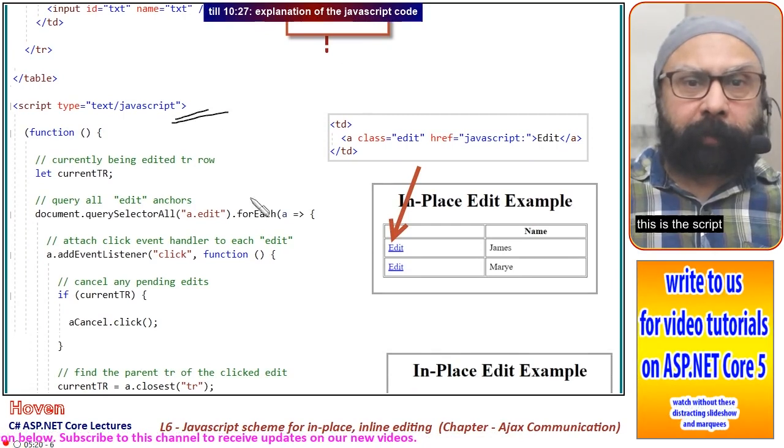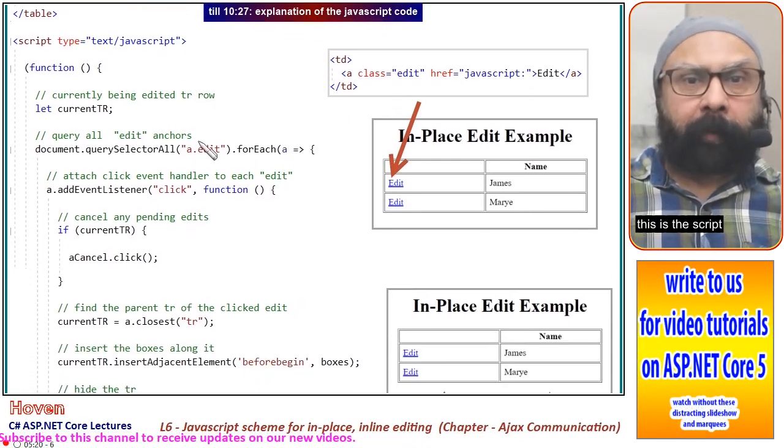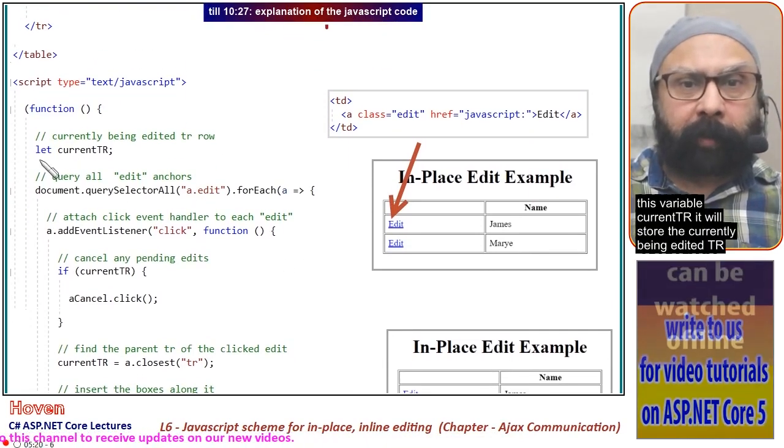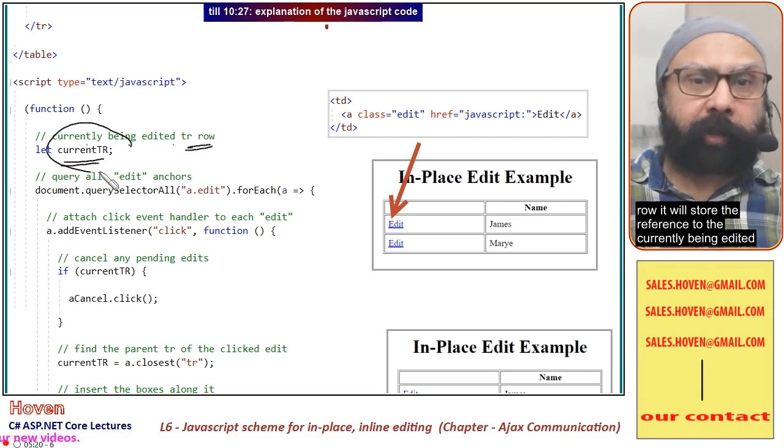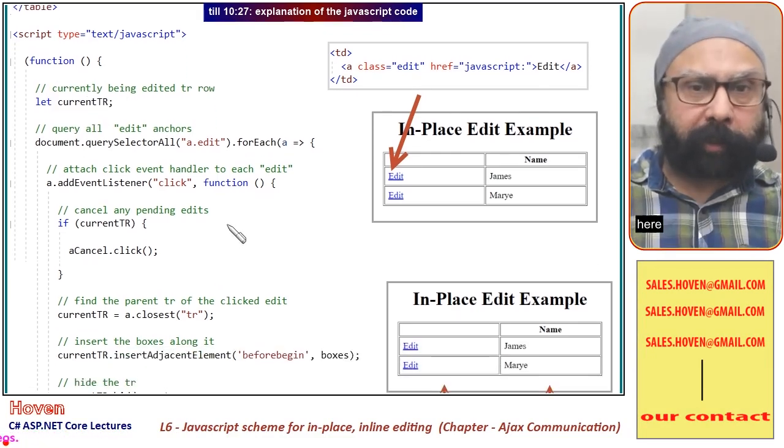This variable currentTr will store the reference to the currently being edited tr row.